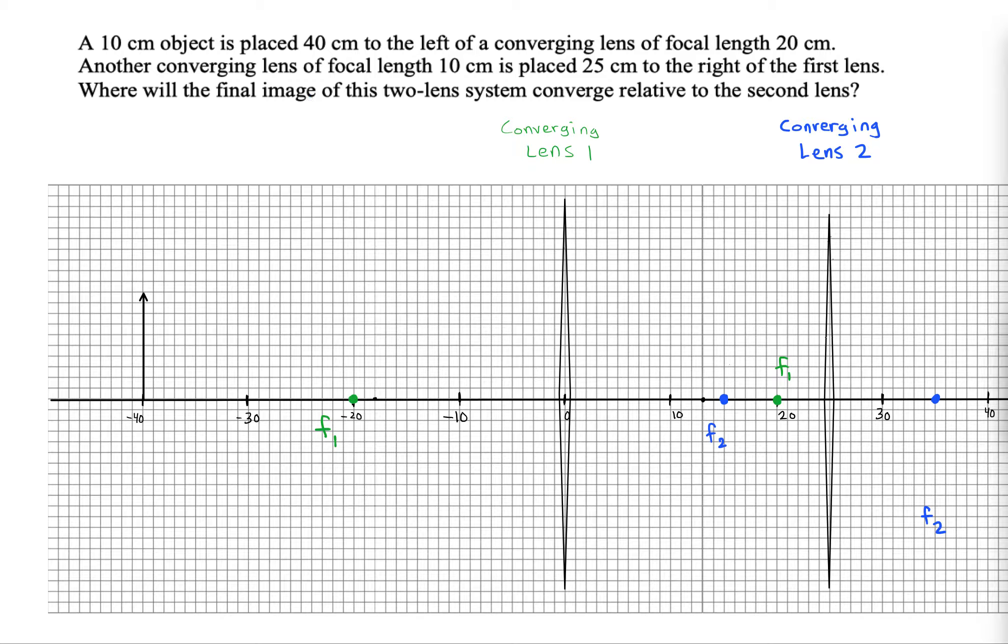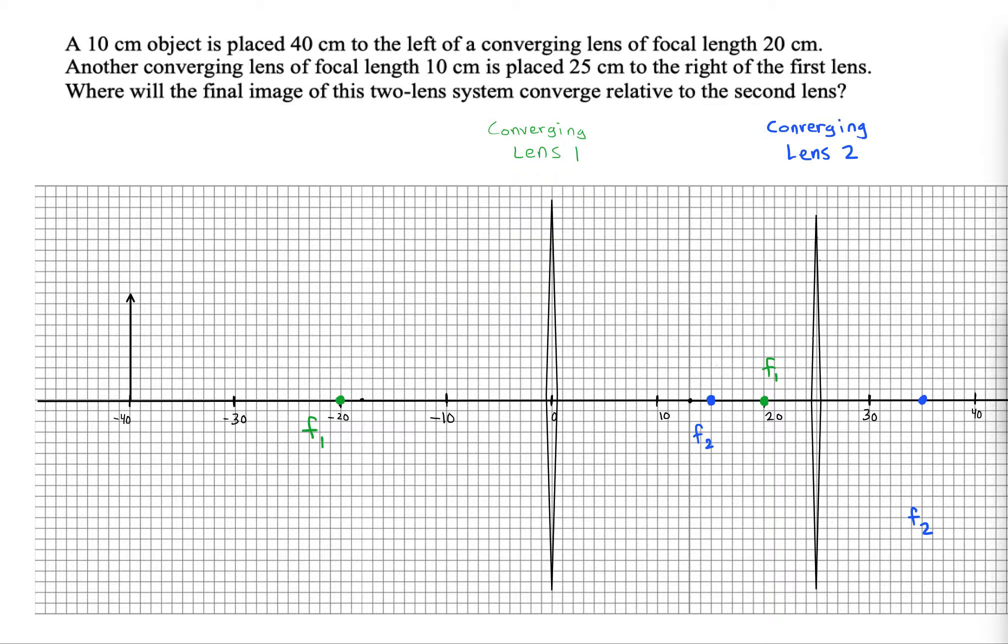Next, I want to try to construct an image for that first lens, pretending like the second lens isn't even there. So how would we do that?